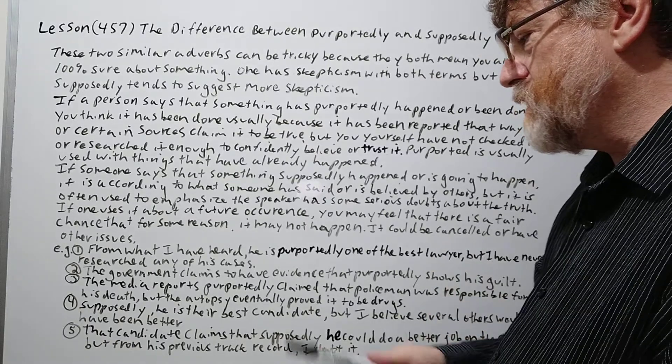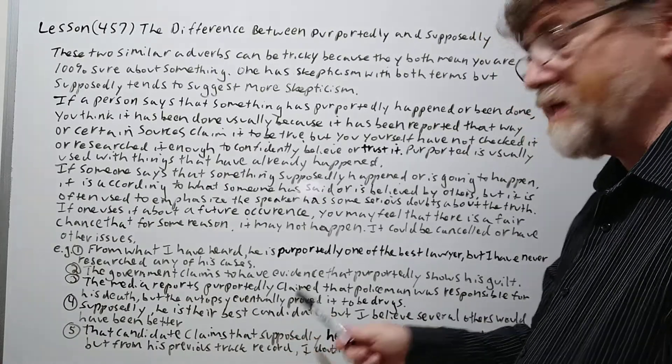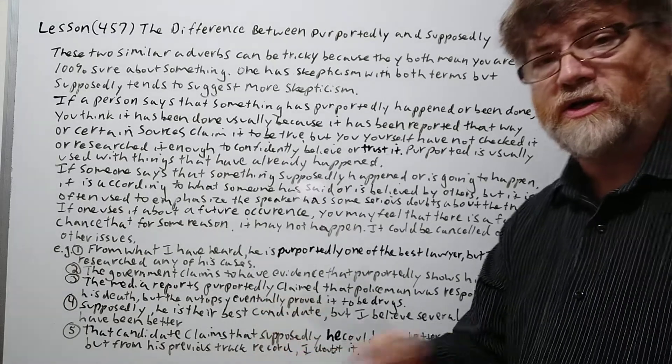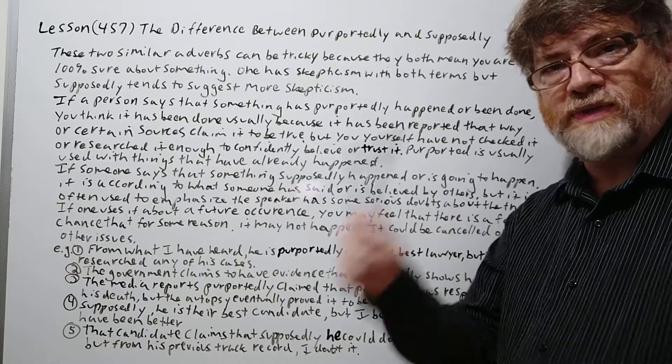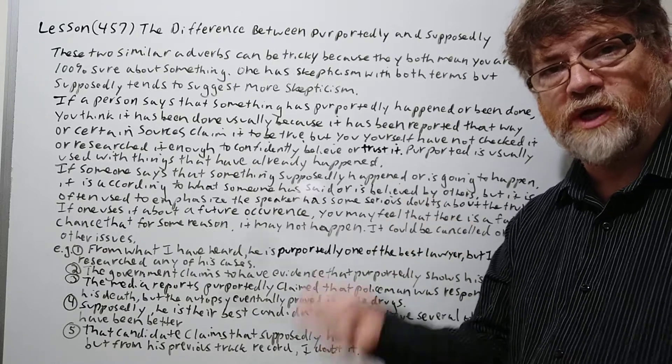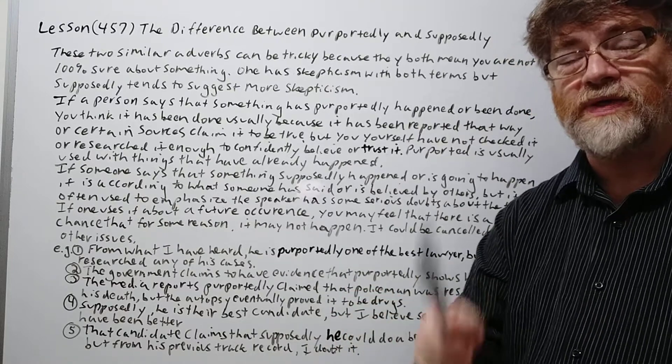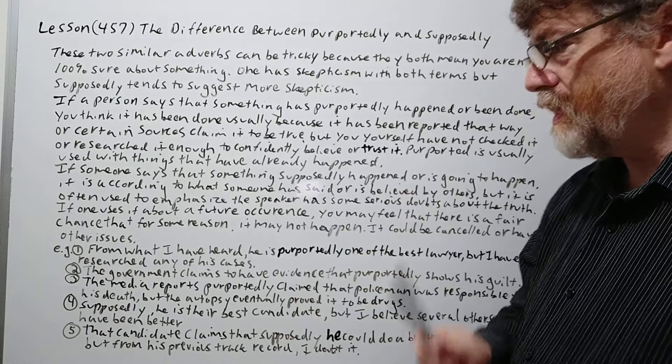Number four here. So now we're using supposedly. Supposedly he is the best candidate, but I believe several others would have been better. So here you're clearly showing your opinion here, and you think from what you know that it would have been the other way. So you're really disagreeing with it, but you know that's who they chose and that's who they think is the best. Okay.